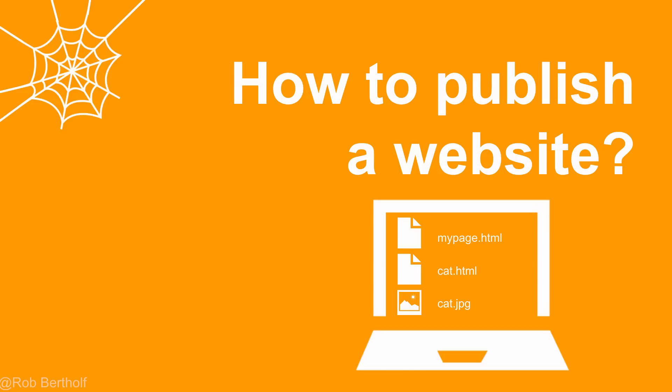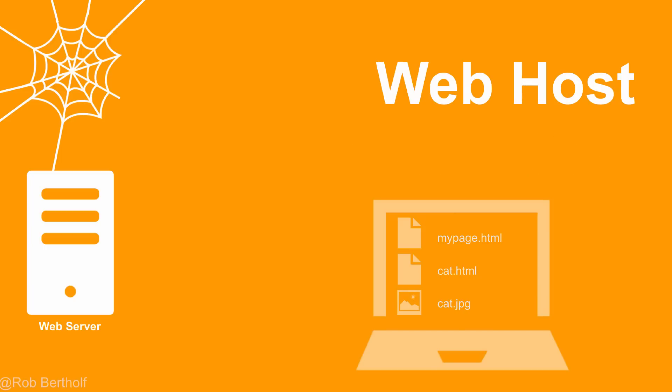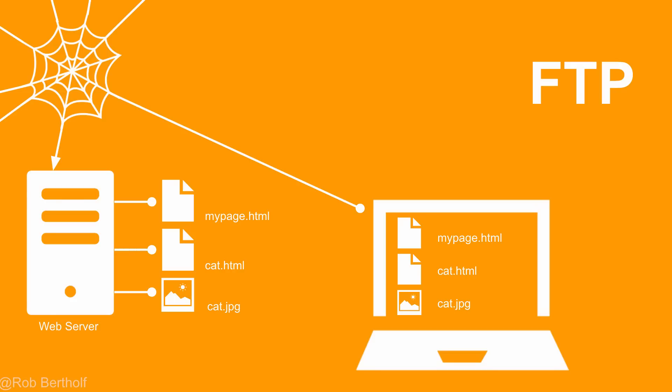So we've now created these HTML files and have them on our computer. But how do other people see them if they're just on our computer? We need a web host. A web host is just a computer that's turned on and has access to the internet — a lot of times we're paying for this, so it's typically a hosting provider. If we want to transfer our files from our computer to the web server, we use File Transfer Protocol, or FTP.